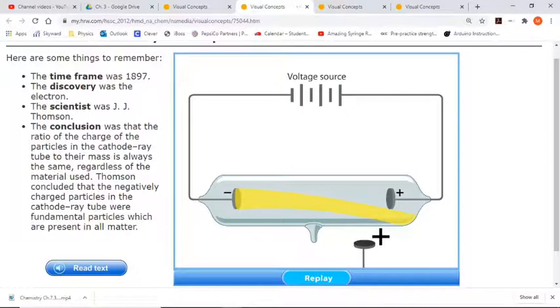By observing the path of electrons in the cathode tube, Thompson was able to calculate the ratio of charge to mass of an electron. Looking at this, make sure you get all the information about the time frame, discovery, and conclusions for J.J. Thompson's cathode ray tube experiment. I want to go back and highlight a few things. You've got your cathode ray tube set up with metal discs on each end, one positive charge, one negative charge.